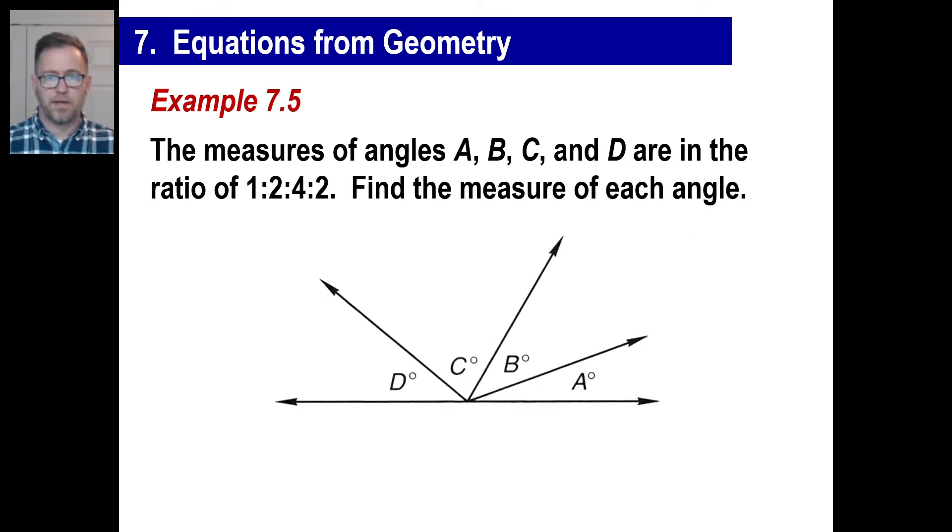Okay. Let's take a look at this. The measures of angles A, B, C, and D are in the ratio of 1 to 2 to 4 to 2. Find the measure of each angle. Well, we know the entire thing equals what? 180, right? The entire thing all the way around is going to be a straight angle, 180 degrees. What we can do is we can just set it up like this. A, B, C, and D, we can go, okay, well, A is a 1X, and then B is a 2X, and then C is a 4X, and then D is back to 2X, and the entire thing adds up to 180 degrees. So there's 1 plus 2 plus 4 plus 2. That gives us 9X, and that equals 180, and so X is equal to 20.